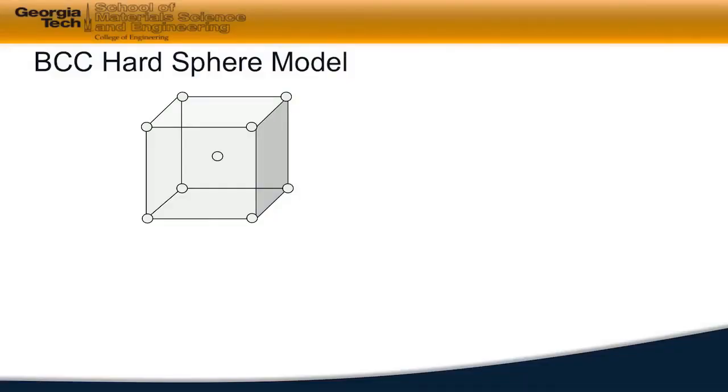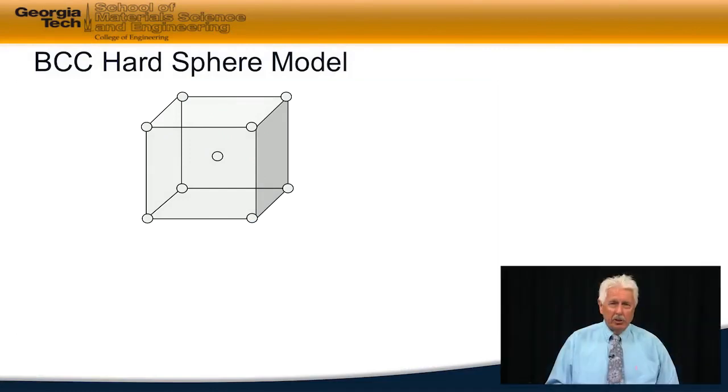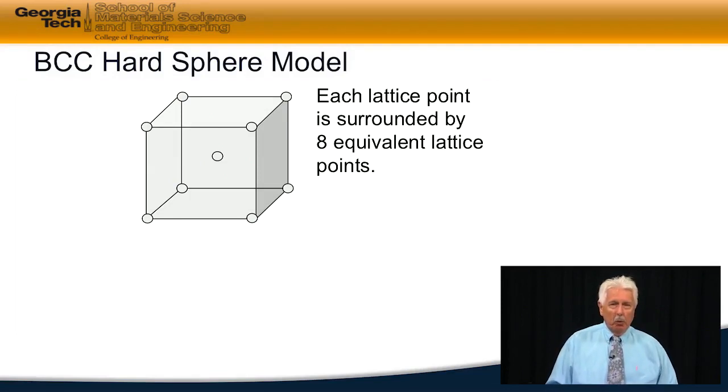When we look at the body-centered cubic lattice, we have positions at each one of the corners and a position that lies wholly inside the center, giving us a non-primitive unit cell with two lattice points per unit cell.